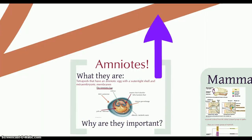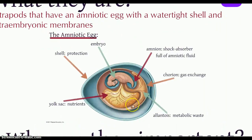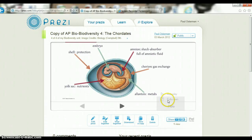Amniotes come along next. Their eggs contain amniotic fluid within the egg, putting organisms in shells that allow additional nutrition. A yolk sac provides nutrition to the shelled animal, allowing further development. Having this shock-absorbing egg with plenty of nutrients gives organisms greater time to diversify and develop.